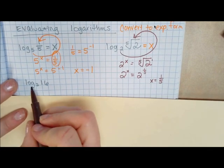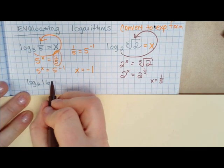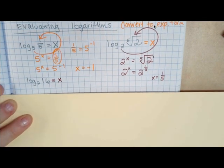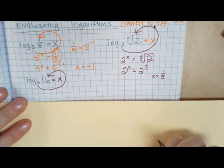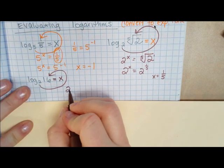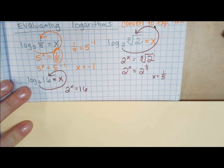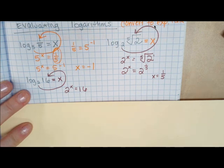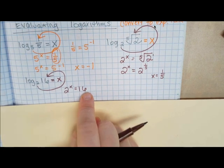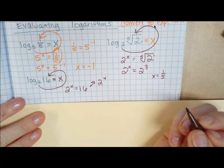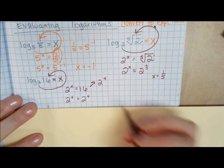Next: log base 2 of 16. We say it equals X so we can solve for it. Convert: 2 to the X equals 16. We need to convert 16 to have a base of 2. Two raised to what value gives you 16? Two to the 4th power. Rewrite: 2 to the X equals 2 to the 4th. So X equals 4.